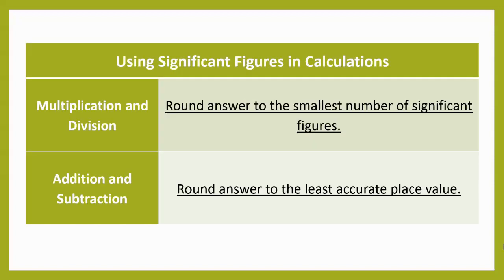So we break this up into two main categories. Anytime we multiply and divide, we're going to take our answer and round it to the smallest number of significant figures. So we look at the data points that we start with and we evaluate how many sig figs they have. If one has two and one has five, two is the smaller number, so we're going to round our answer to two sig figs. For addition and subtraction, this one's a little more tricky. We want to round our answer to the least accurate place value. I'm going to talk through some examples with that.